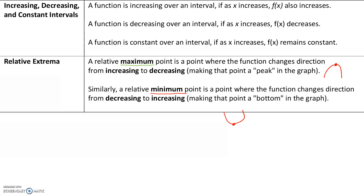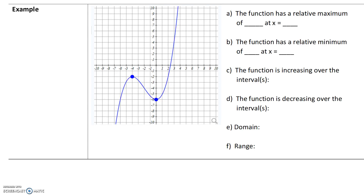The function has a relative maximum where it goes from increasing to decreasing. The graph is going up — increasing — and then here it changes direction and starts decreasing. So this point is a relative maximum. When we say the relative maximum 'of,' we're talking about the y value, which is negative 2. The relative maximum is negative 2, and it occurs at x equals negative 4.